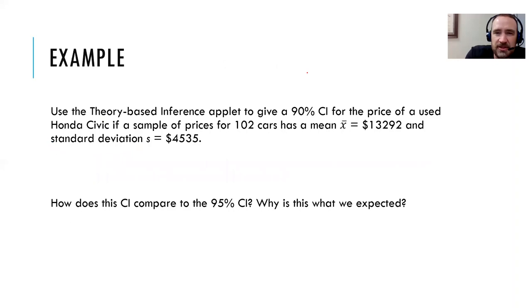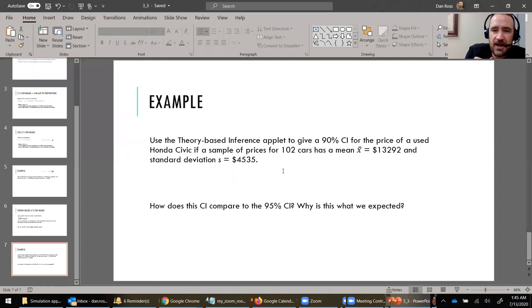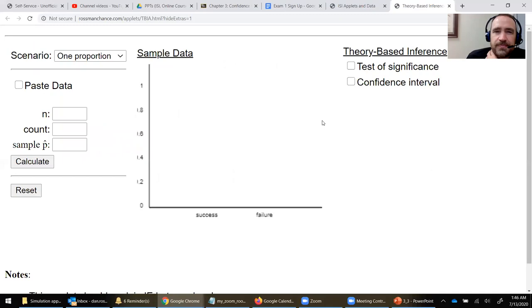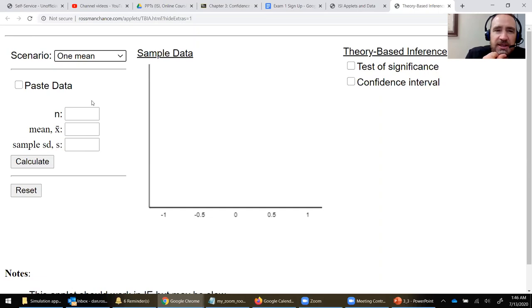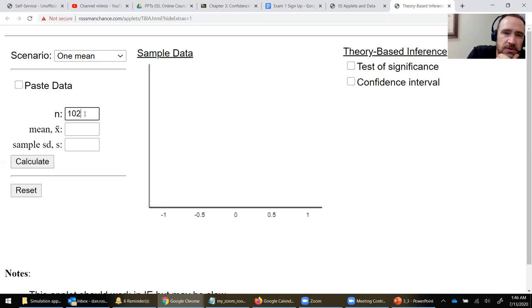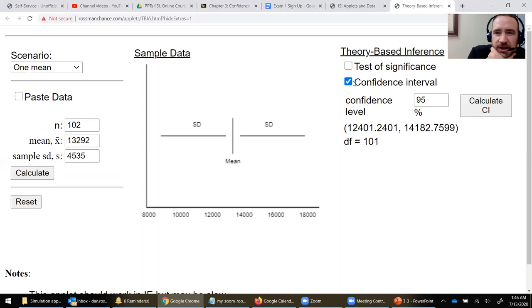Let's say we're talking about the same scenario. Let's see if we can calculate a 90% confidence interval for our mean Honda Civic price. I'm going to go ahead and jump to the applet. And when I want to do a theory-based approach, I head for the theory-based inference applet. One thing to take note is that we have a scenario to take precautions about, and we don't want one proportion. We're talking about a mean price. So make sure you choose the right scenario whenever you use the theory-based applet. We looked at 102 cars. The mean x bar from our sample was 13,292. And the sample standard deviation, 4535. I'm going to hit calculate and then just check confidence interval.